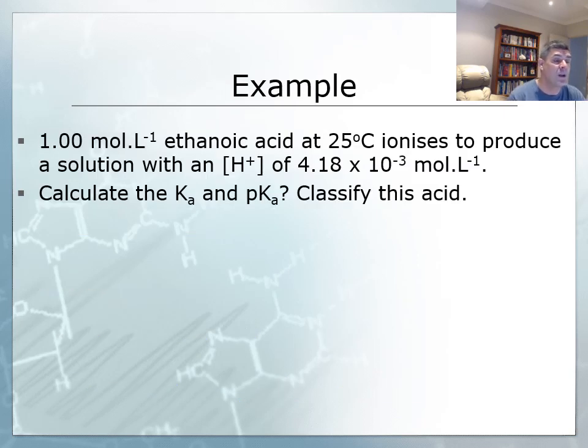What we will do is have a quick look at the sort of questions that you're likely to get. So if we have a one molar solution of ethanoic acid at 25 degrees, we know this is going to ionize to produce a solution with the acetate or ethanoate ion and H plus ions.